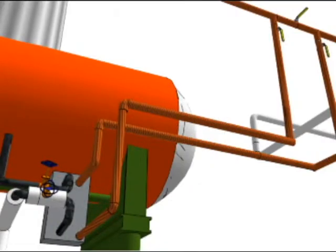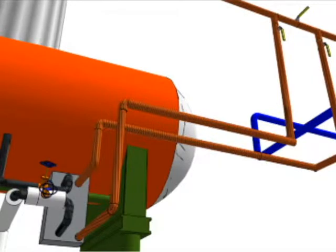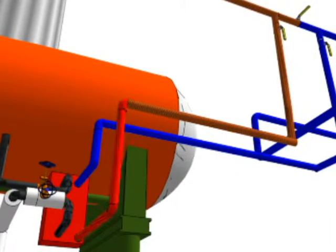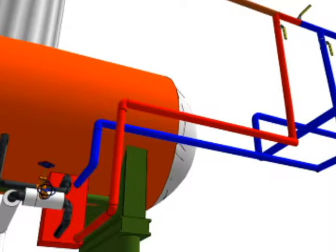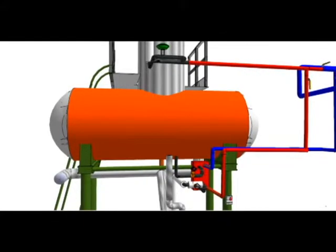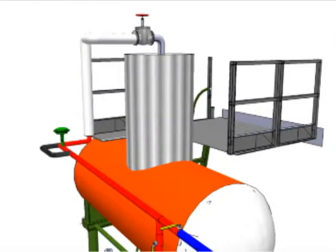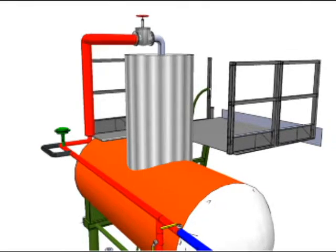This sequence shows the water coming from the water softener and going through the heat exchange from a different angle. From this angle you can see it going up and into the top of DA2.